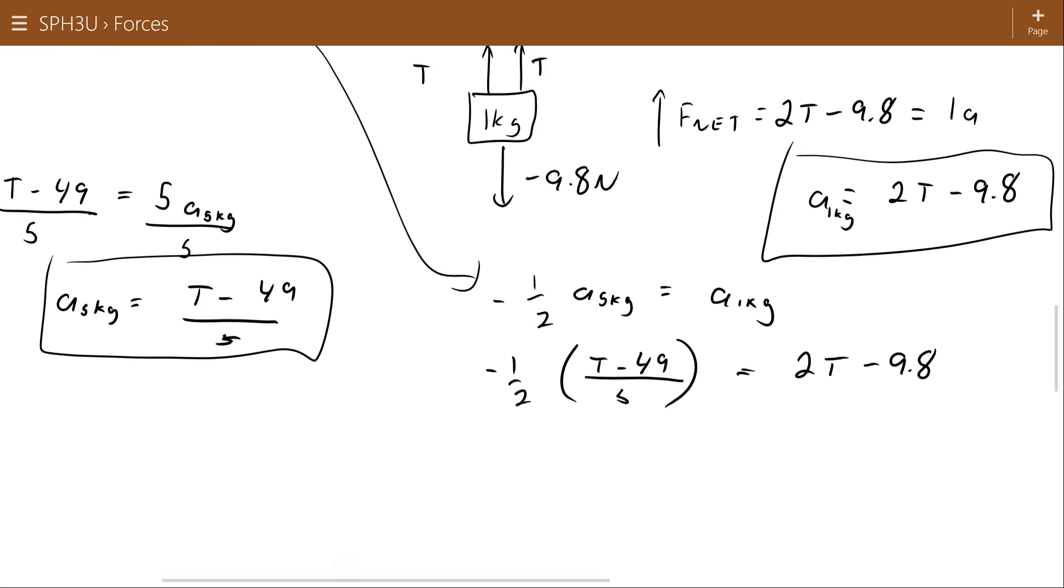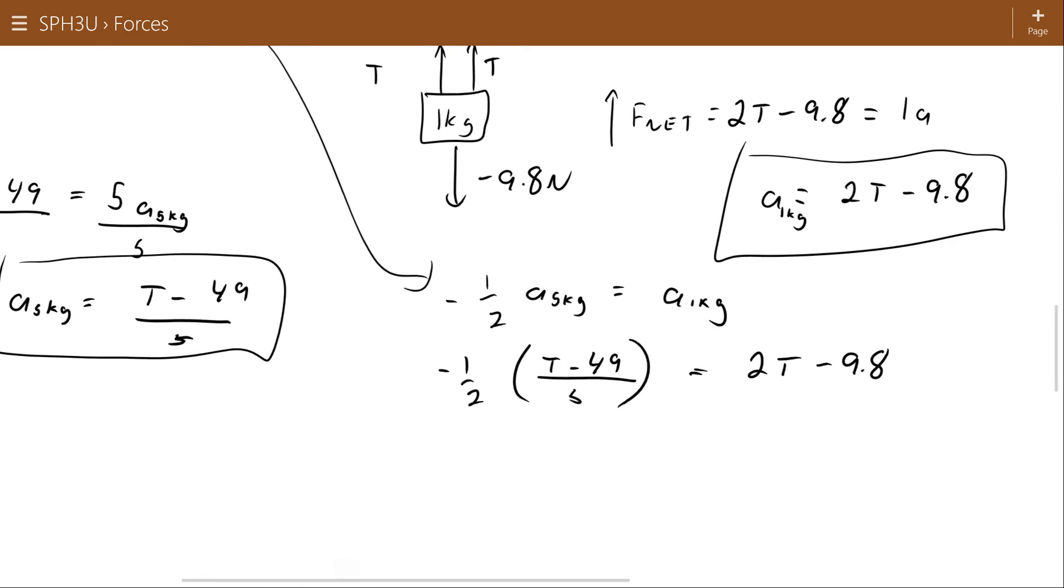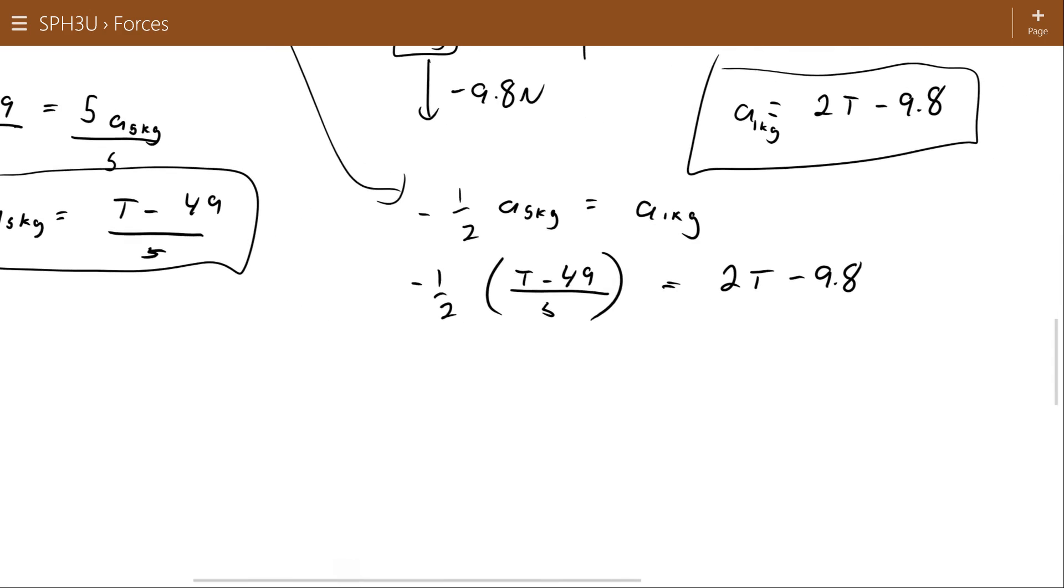The easiest way to solve this, I think, is going to be to multiply both sides by negative 10, and then that will clear out the denominators on this side, and give me a fairly simple equation to solve.